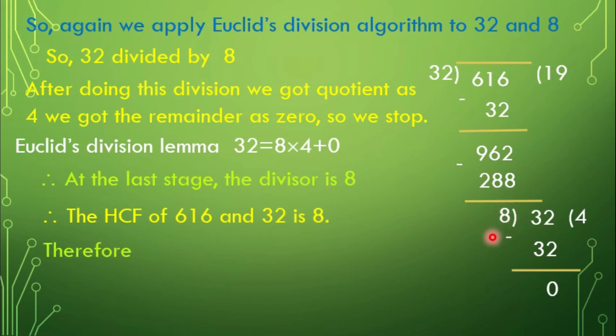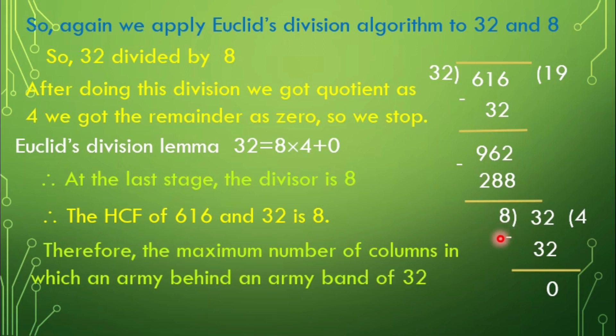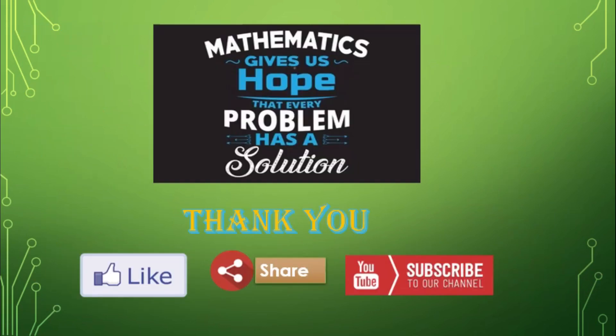the maximum number of columns in which an army contingent of 616 members can march behind an army band of 32 members in a parade is 8. Mathematics gives us hope that every problem has a solution. Thanks for watching.